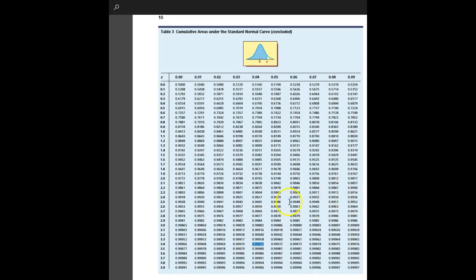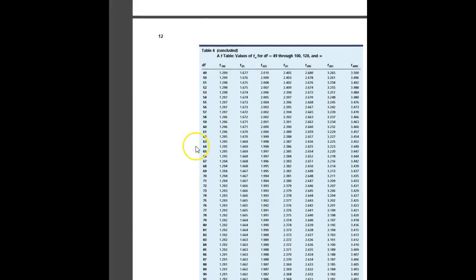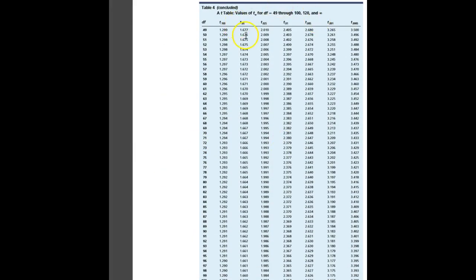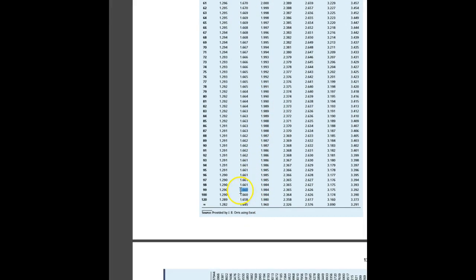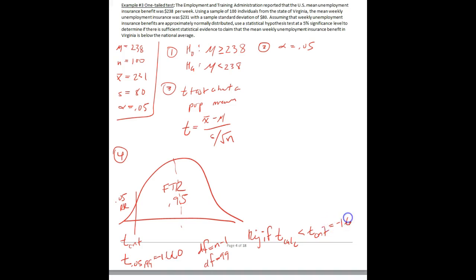We look in our table for t of 0.05 with 99 degrees of freedom. We find the column for 0.05 and scroll down to degrees of freedom 99 — the value is 1.660. Our rejection rule: reject if t-calc is less than t-crit, which is negative 1.660, because it's on the left side.